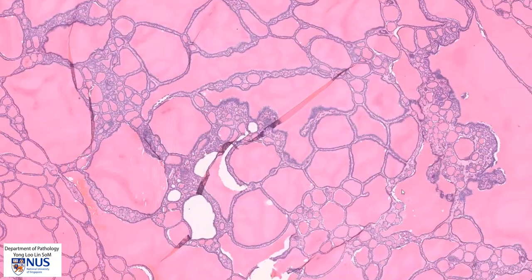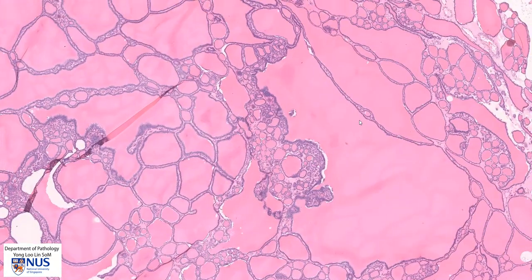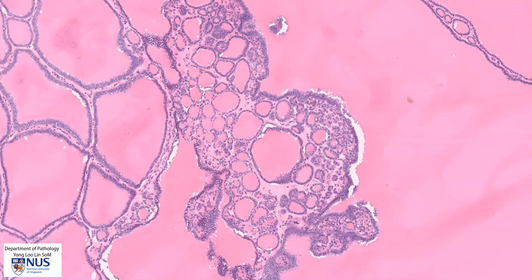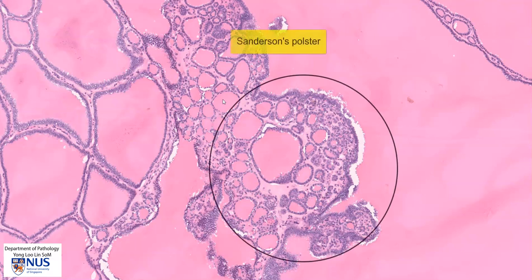There is a feature here. If you look at this large follicle, you can see that there is sort of a bulge into the follicle, and within this bulge there are many small follicles. This area of protrusion into the follicle is known as a Sanderson's polster, and this is very commonly seen in nodular goiter.